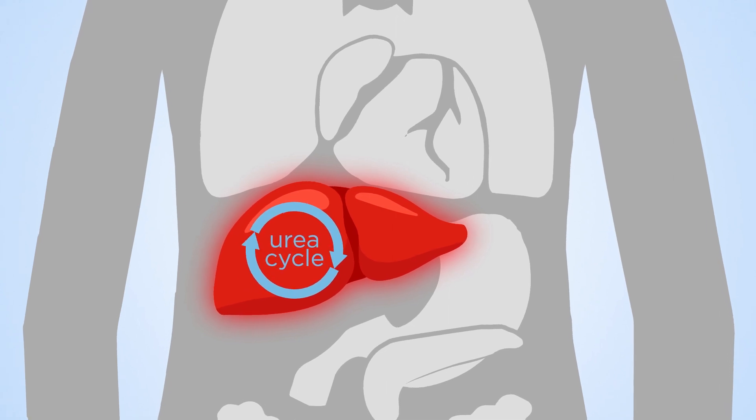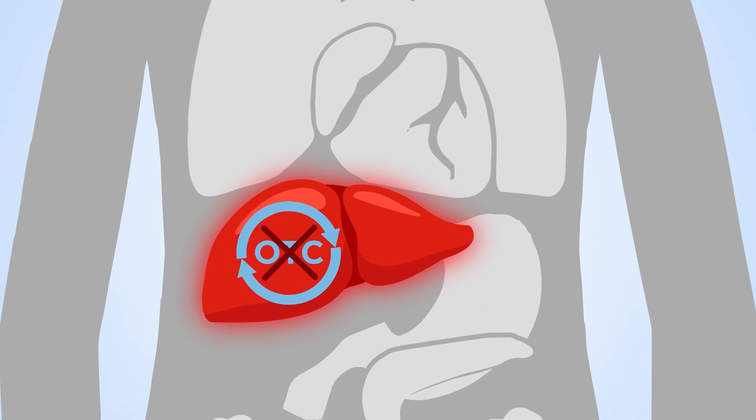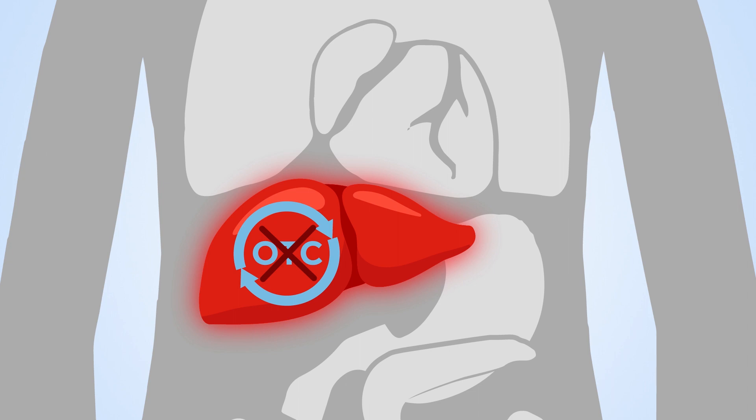Some people inherit a disorder called OTC deficiency, where their bodies cannot produce this enzyme. In this case, nitrogen can't be removed from the system, leading to a build-up of toxic levels of ammonia.